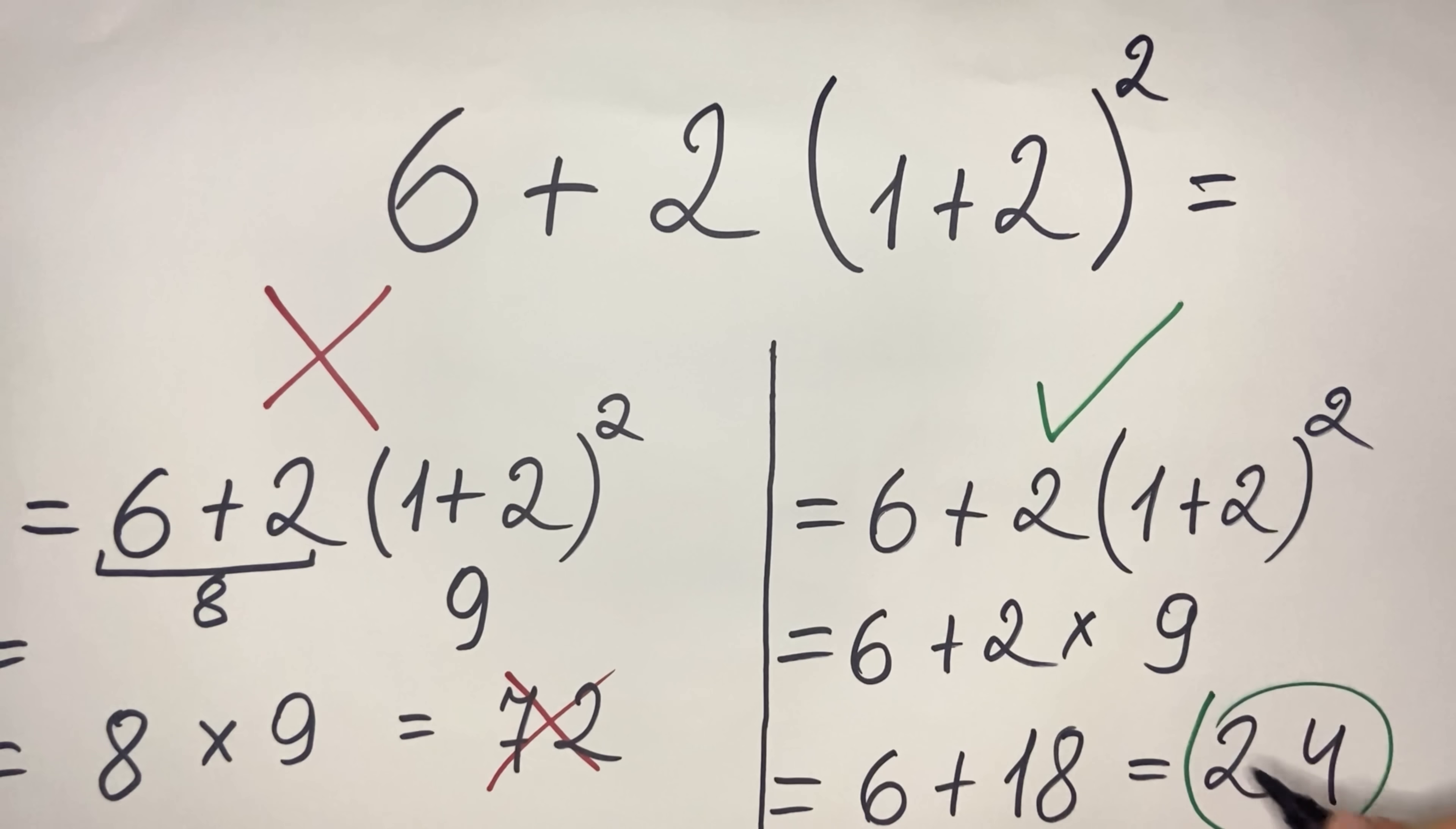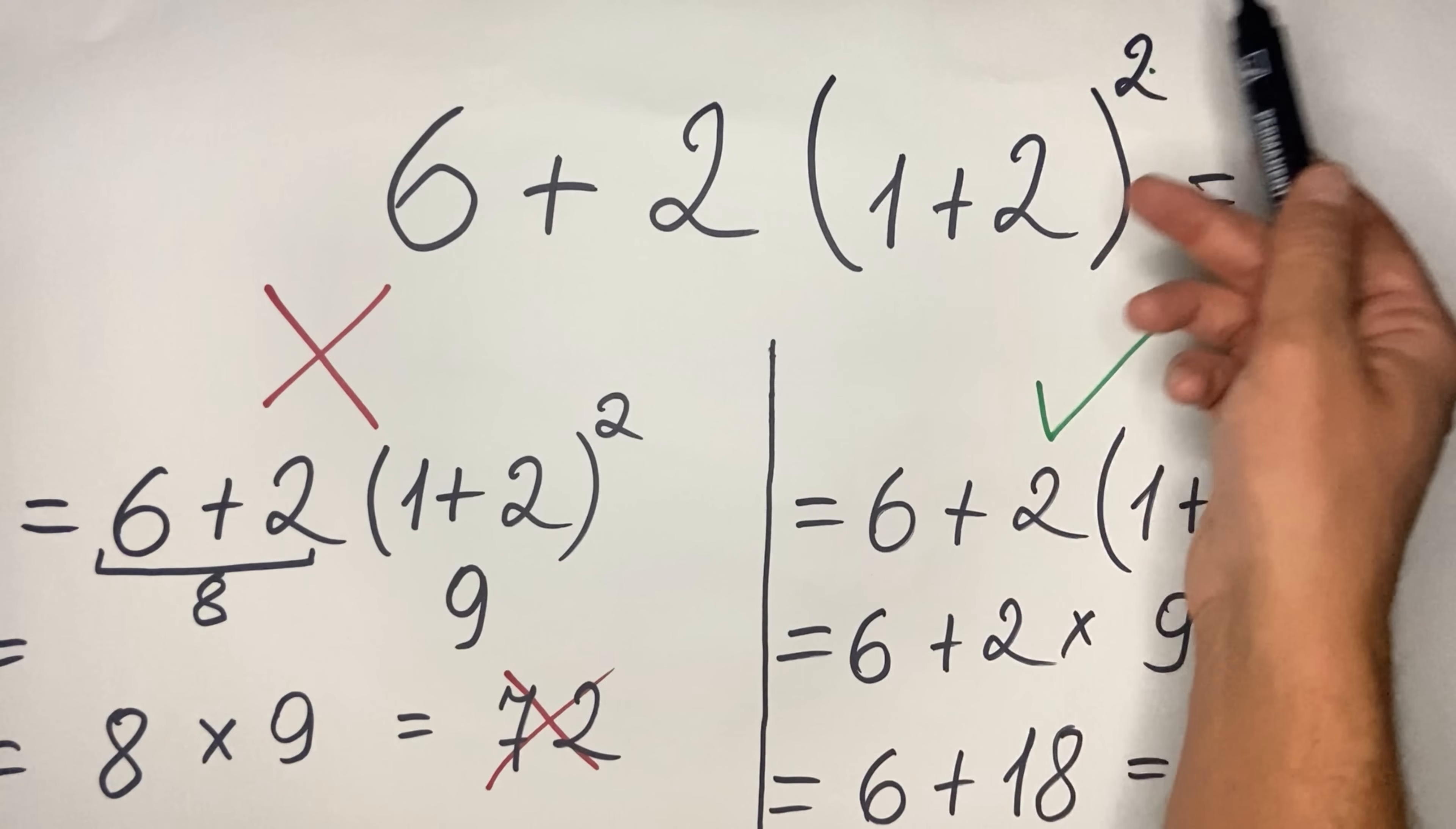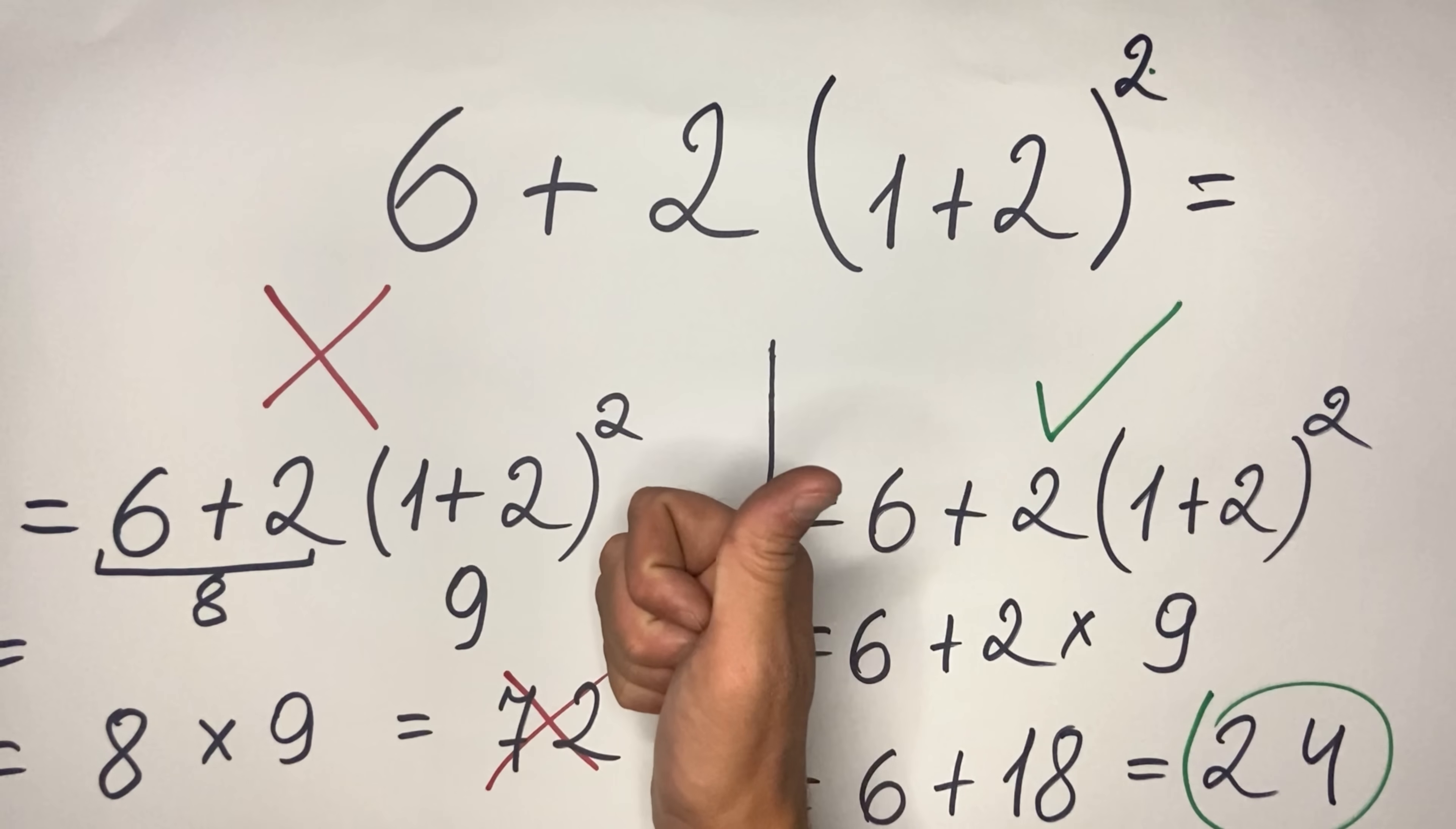So this is the correct result and the correct approach. So again, PEMDAS rule: first the parentheses, then you do the exponent, then you do the multiplication or division, and only then you do the addition or subtraction. Thank you very much guys, I hope you like the example. Please hit the like button and subscribe. See you in the next video, have a nice day.